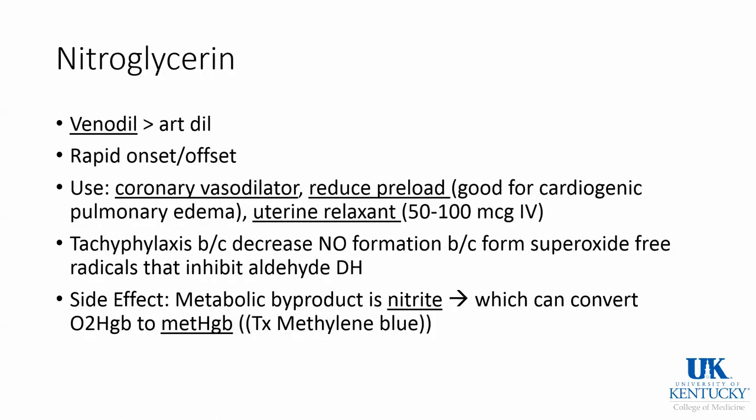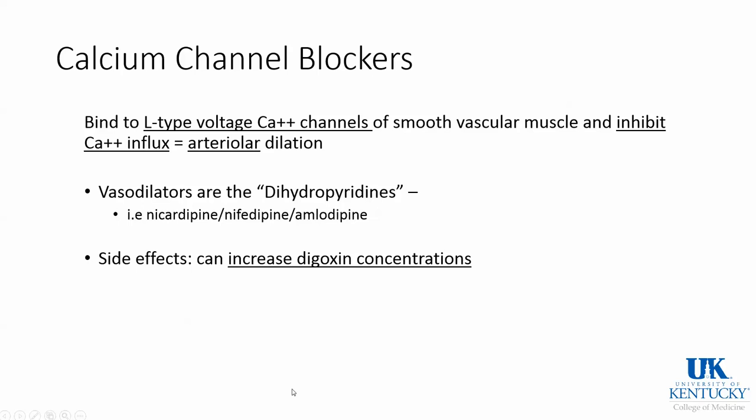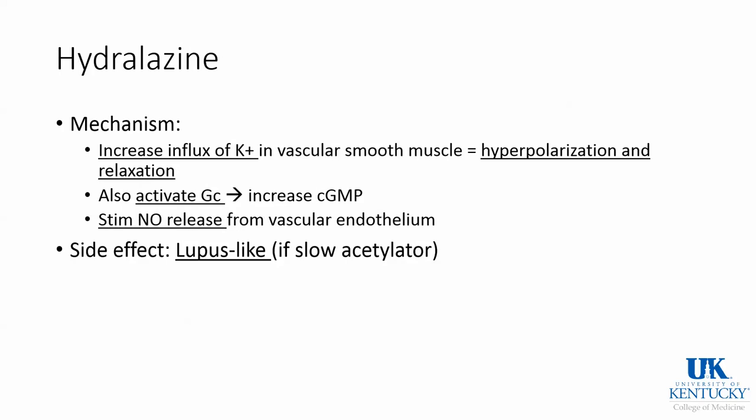Nitroglycerin causes more venodilation, so it helps decrease preload. It can be used as a coronary vasodilator as well as a uterine relaxant. Tachyphylaxis can occur, and if you give too much over too long you can get methemoglobinemia; the treatment of choice is methylene blue. Hydralazine causes vascular relaxation by increasing potassium influx, causing hyperpolarization, eventually leading to nitric oxide release. The side effect is lupus, and it's usually in slow acetylators.